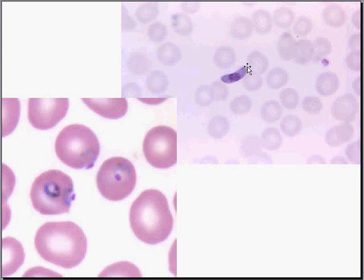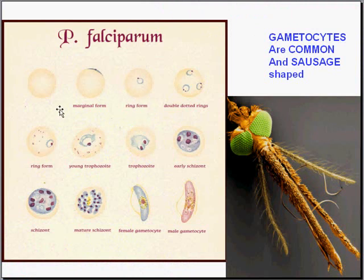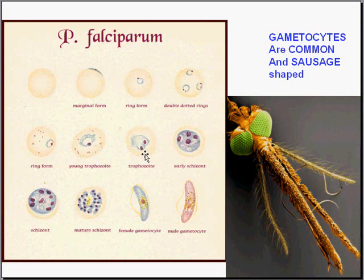Just remember that the only gametocyte shaped like a sausage is seen in Plasmodium falciparum. Plasmodium falciparum starts out with a cell that looks normal, can show a slight marginal structure, then develops into ring forms. Sometimes you can see a few little dots, but the ring forms generally develop into trophozoites, which eventually develop into schizonts — S-C-H-I-Z-O-N-T. The schizonts eventually develop into a mature gametocyte, either female or male, which are released back into the Anopheles mosquito.